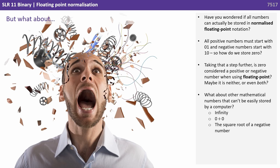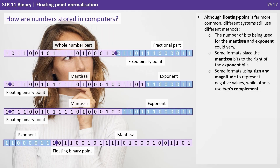What about other mathematical numbers that can't be stored by a computer — for example, infinity, the result of 0 divided by 0, or the square root of a negative number? For years there was no standard way. Some systems use fixed point binary, which fixes the point within a register, and where the point is fixed depends on how a particular computer system has been designed. Although floating point is far more common, different systems still use different methods. The number of bits used for the mantissa and exponent could vary, and some formats place the mantissa bits to the right of the exponent bits. Some formats use sign and magnitude to represent negative values, while others use two's complement.